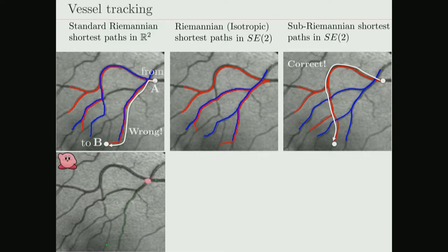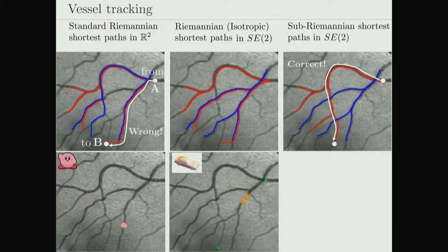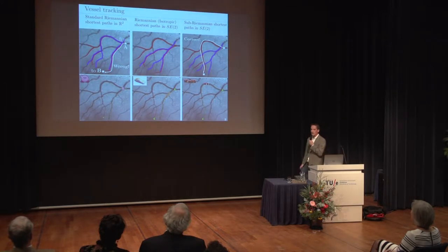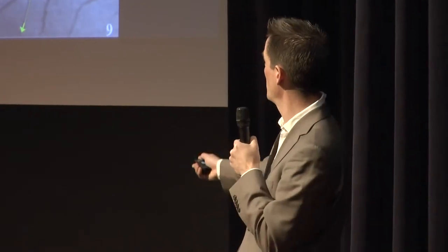Here are some animations showing what goes wrong if you do wavefront propagation directly in the image domain. A partial solution is to make an orientation score and do tracking there, but if you basically allow these cars to step aside — which you shouldn't — you should use the sub-Riemannian geometry. If you do use the correct geometry, then you automatically track these vessels correctly, as you can see here with the Ferrari.